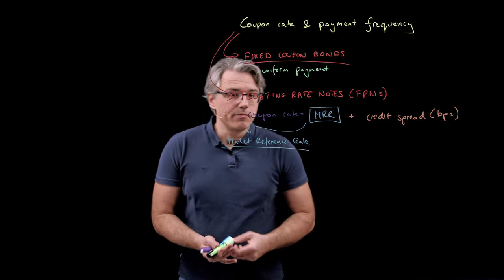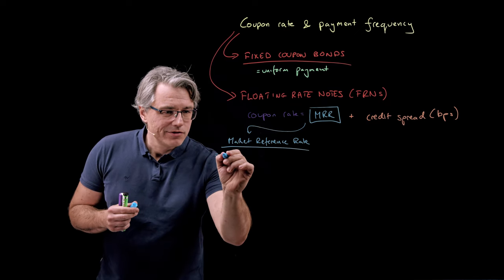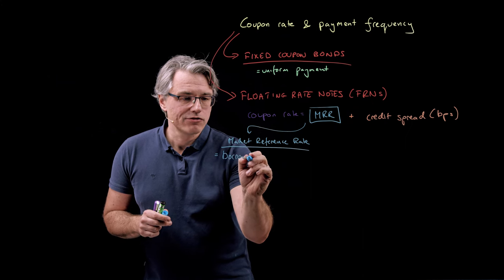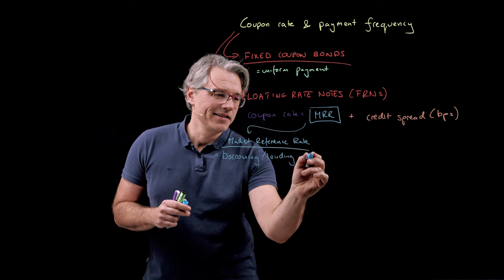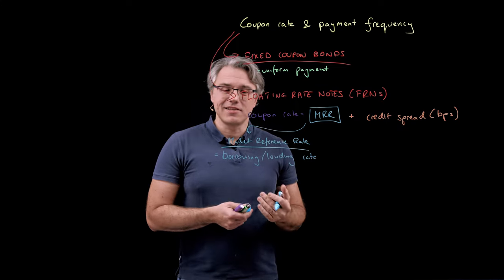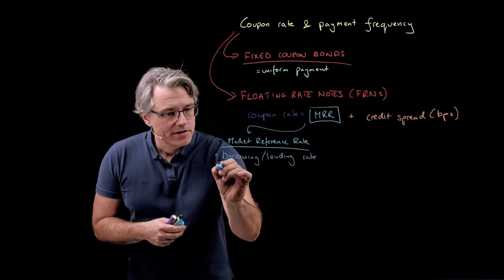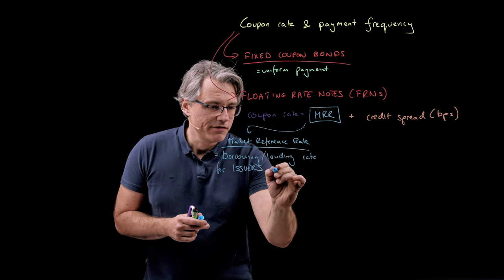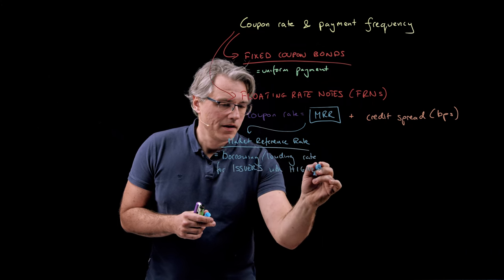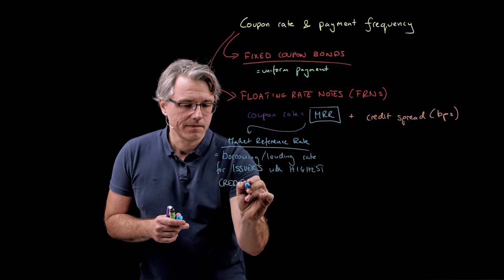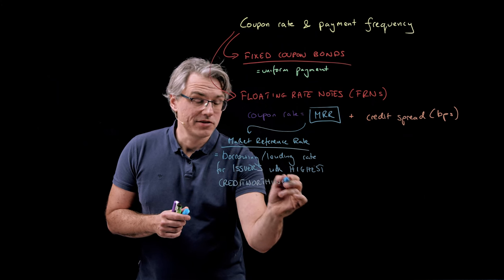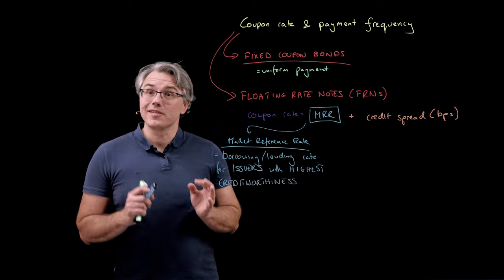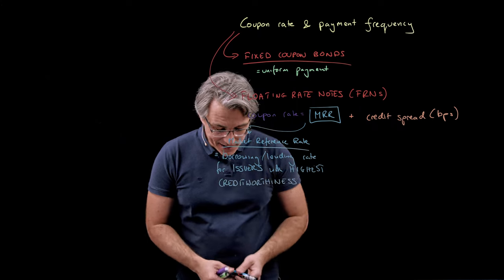The market reference rate is equal to the rate at which top-quality borrowers borrow money — the borrowing and lending rate for issuers with the highest level of creditworthiness. This typically in most countries would be the government, although in some countries the government is not necessarily the most creditworthy borrower.